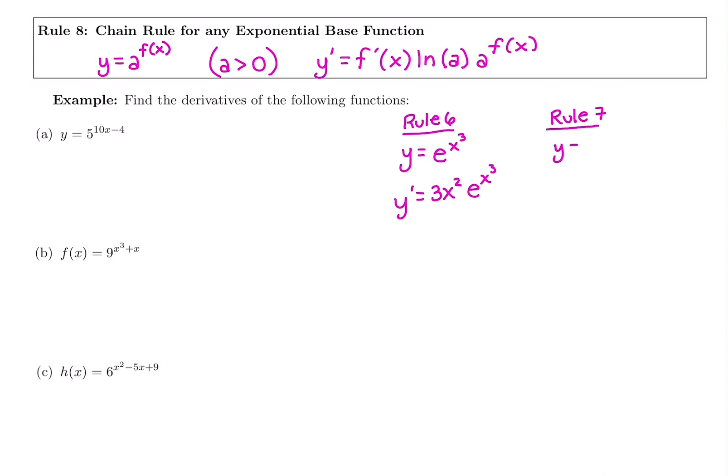Rule 7 said if you change your base, maybe like 9 to the x, the derivative is ln of 9 times 9 to the x. Okay, now we're combining these rules here.